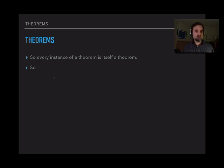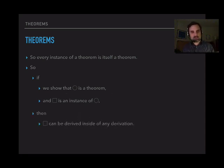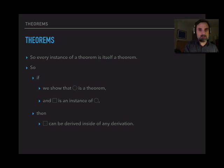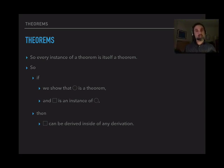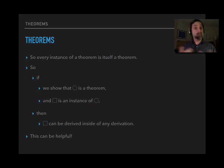And that means this: if we show that circle is a theorem, and we know that box is an instance of circle, then we know that box can be derived inside of any derivation — box is a theorem, and therefore box can be derived inside of any derivation. So if you show that one sentence is a theorem, then you know that any instance of it can be stuck inside of any derivation you like. That's the key point of this video. We're going to learn why we care about that in the next video when I talk about derived rules. So let's get to that video.